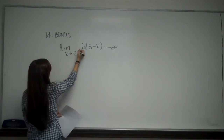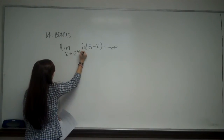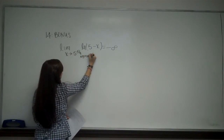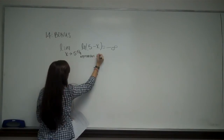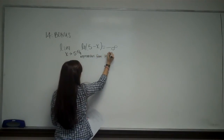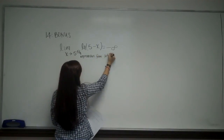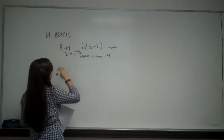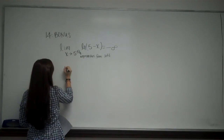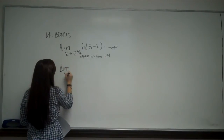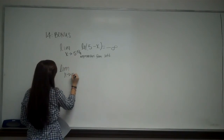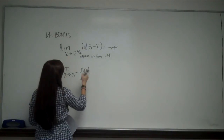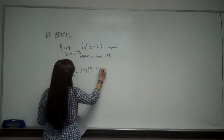So what happens — remember, if I have a little negative up here, this means approaches from the left. Don't confuse that with negative 5. So when I plug that in, I'm going to have — let's just look at the limit as x approaches 5 from the left of ln of 5 minus x.